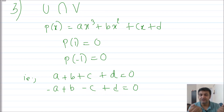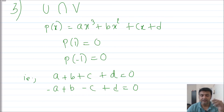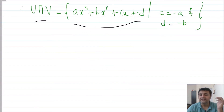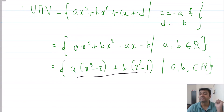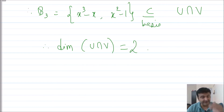Adding the two equations cancels a and c, giving 2b + 2d = 0, so d = −b. Subtracting the equations cancels b and d, giving 2a + 2c = 0, so a = −c. Substituting both conditions into p(x) and factoring, U∩V is spanned by (x³ − x) and (x² − 1). These two are linearly independent, so they form a basis for U∩V, and the dimension of U∩V is 2.